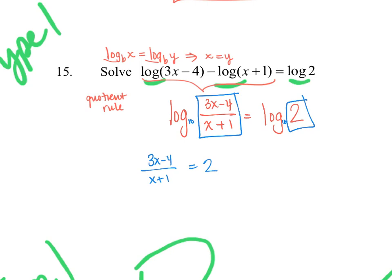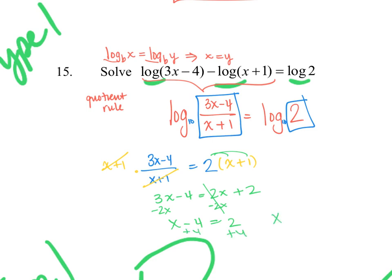This is now a rational equation. Multiplying both sides by (x plus 1) to clear the denominator gives 3x minus 4 equals 2x plus 2. Putting x's on one side gives x minus 4 equals 2, so x equals 6. Checking: 6 plus 1 is positive and 3 times 6 minus 4 is positive, so x equals 6 is a valid answer.